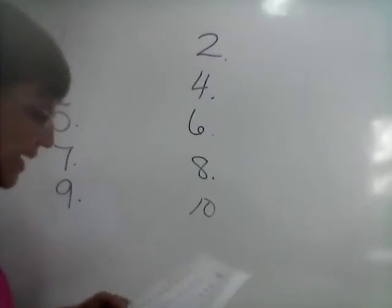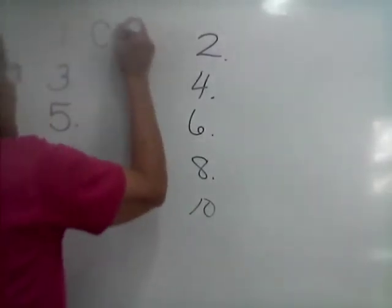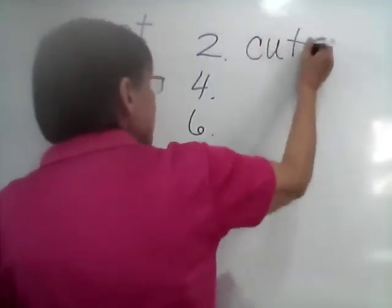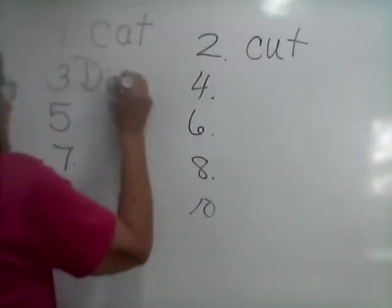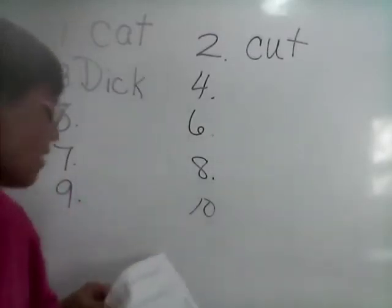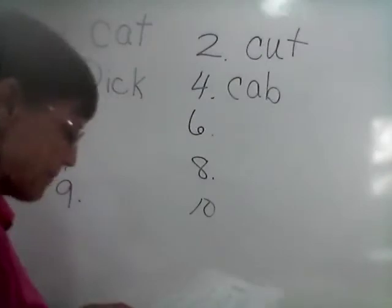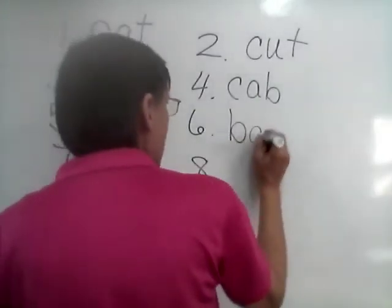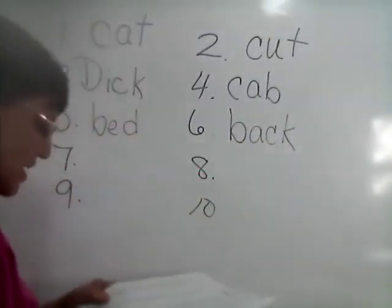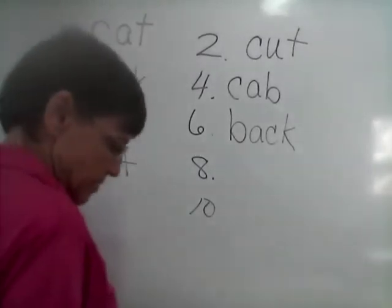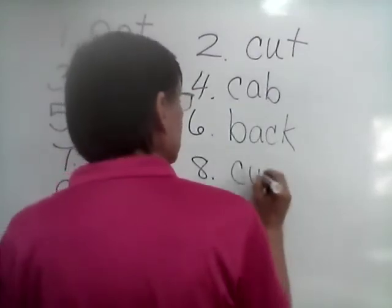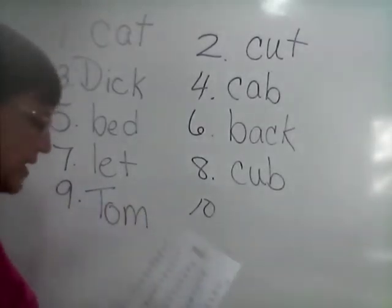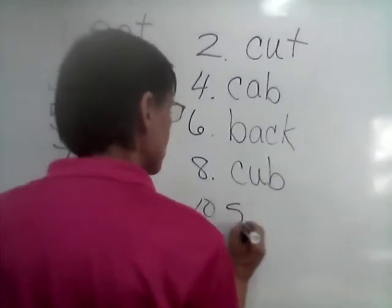Okay, are you ready? Let's see how you did. Number one, cat — C-A-T, cat. Number two, cut — C-U-T, cut. Number three, Dick — D-I-C-K, Dick with a capital letter. Four, cab — C-A-B, cab. Five, bed — B-E-D, bed. Six, back — B-A-C-K. Seven, let — L-E-T, let. Number eight, cub — C-U-B, cub. Nine, Tom — big T because it's a name, T-O-M. And number ten, some — S-U-M.